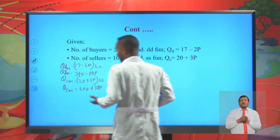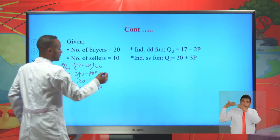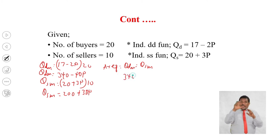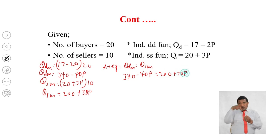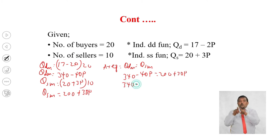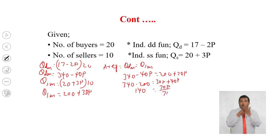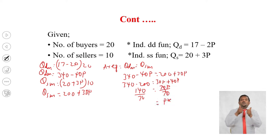Now we have the market demand function and the market supply function. At equilibrium, the market demand always equals market supply. So we set 340 minus 40P equal to 200 plus 30P. Collecting like terms: 340 minus 200 equals 30P plus 40P, giving 140 equals 70P. Dividing both sides by 70, the equilibrium price is 140 over 70, which equals 2.